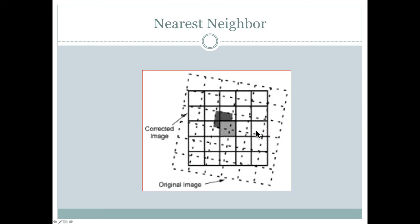So this would be an example of the nearest neighbor. The original image is shown as these dotted pixels here and the corrected image after the georectification, after the geometric correction, is shown by these solid lines here.